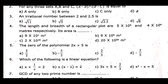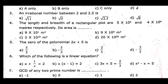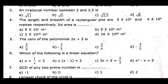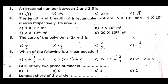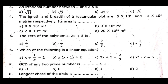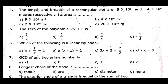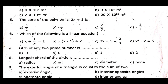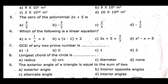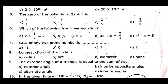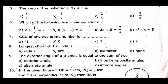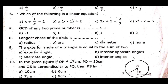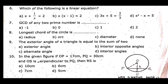Third one: An irrational number between 2 and 2.5 is dash. Fourth one: The length and breadth of a rectangular plot are 5 into 10 to the power 5 and 4 into 10 to the power 4 meters respectively. Its area is dash. Fifth one: The zero of the polynomial 2x plus 5 is dash. Sixth one: Which of the following is a linear equation? Seventh one: GCD of any 2 prime numbers is dash.